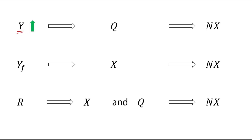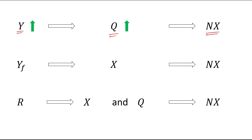First, if home income increases — and we know that home income affects imports — then the increased income of the home country will increase our ability to purchase foreign goods, ultimately increasing imports. An increase in imports will have a negative impact on net exports, so net exports will be decreased.